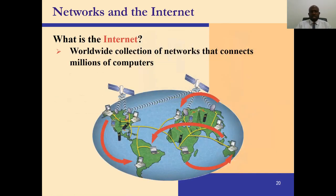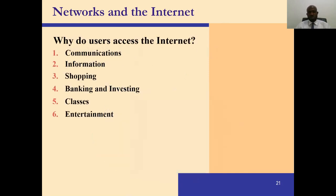The internet is an international network — a group of networks connected globally. The internet is a worldwide collection of networks that connect millions of computers. Users access the internet for communication, for information, for shopping, for banking and investing, for online lectures like this one, for entertainment, and for social media.